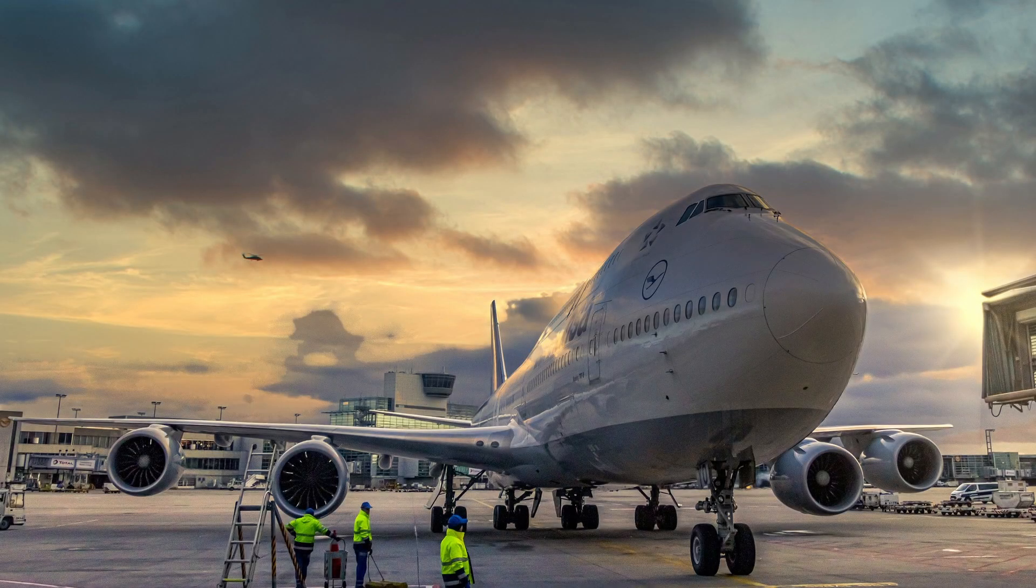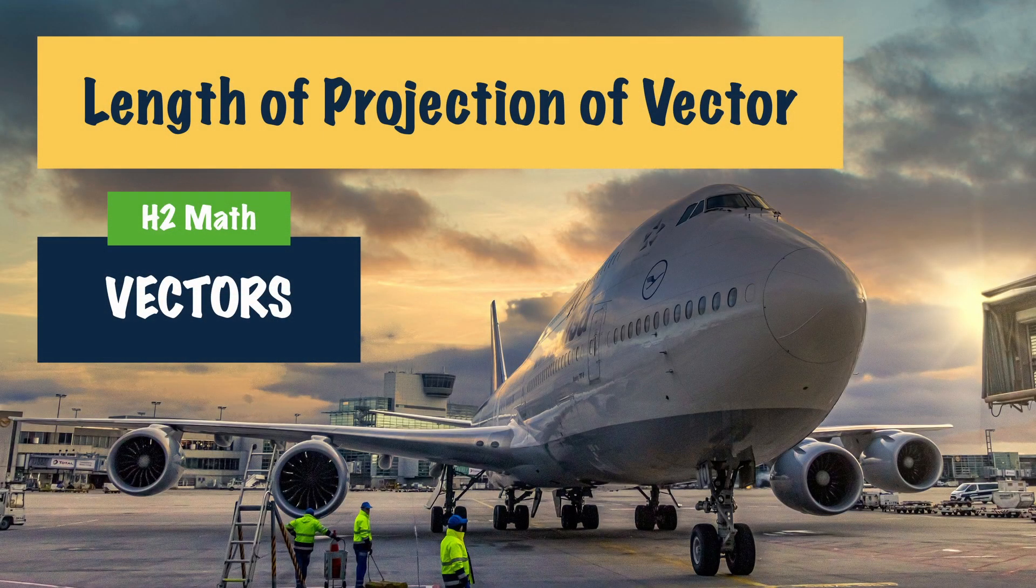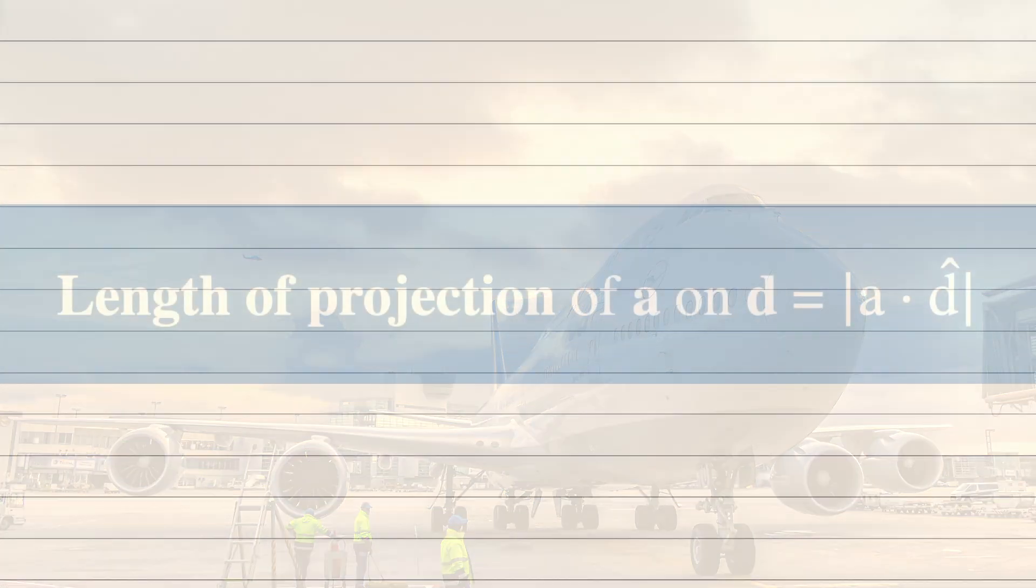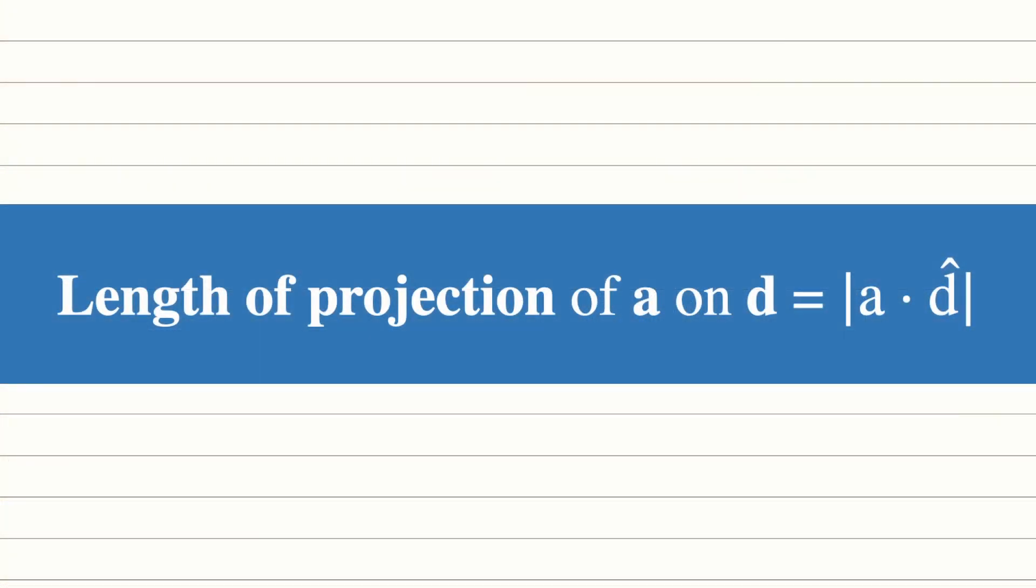Hi everyone, today we are going to find out how we could get the length of projection of a vector, which is usually written as length of projection of vector a on vector d is modulus a dot unit vector of d.